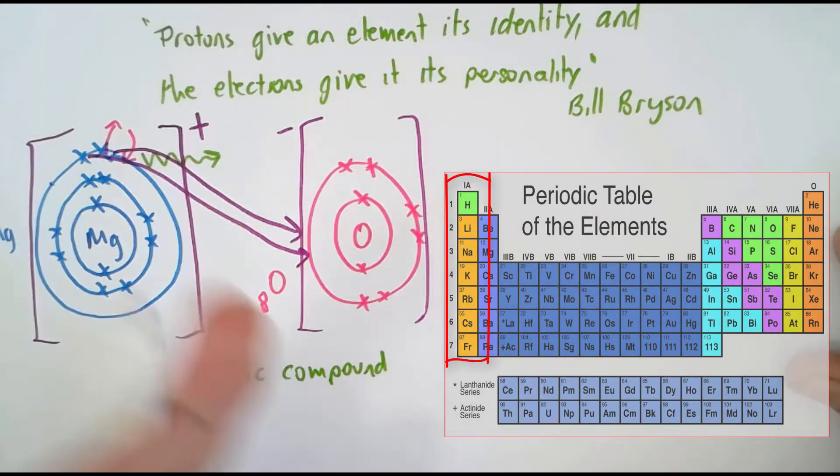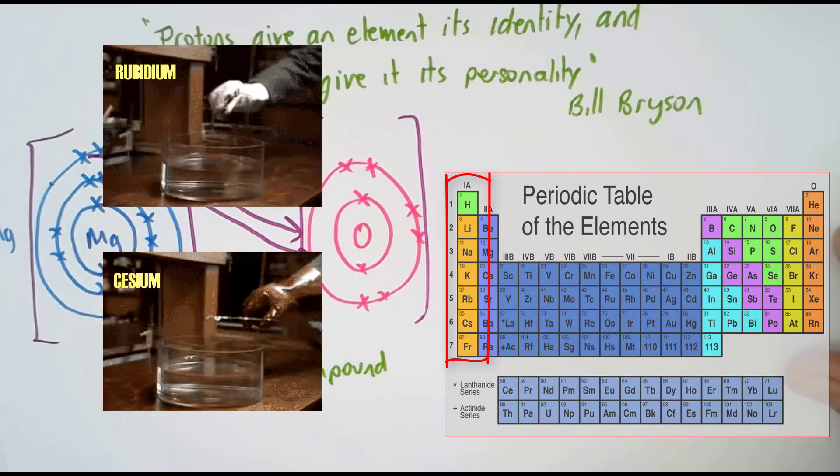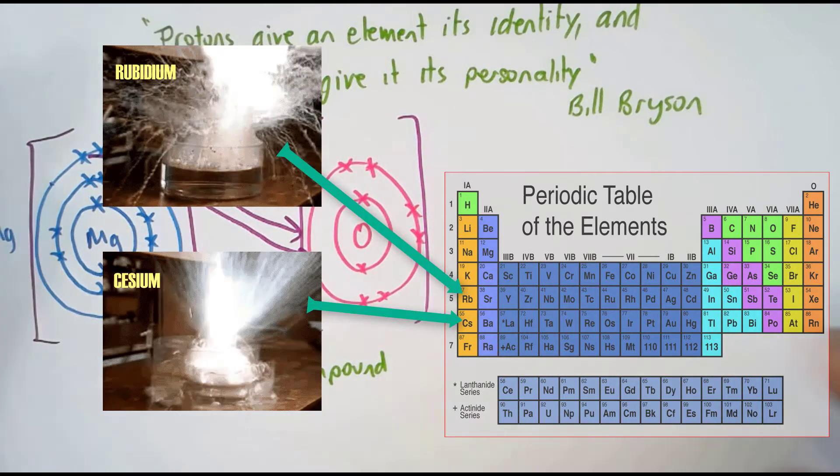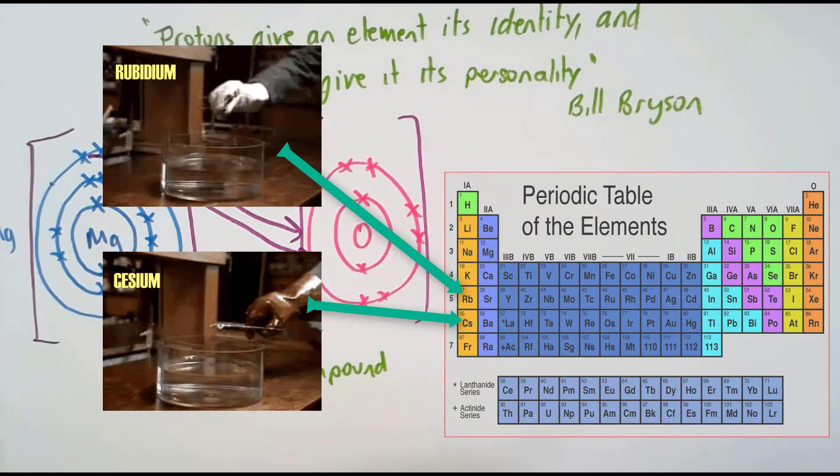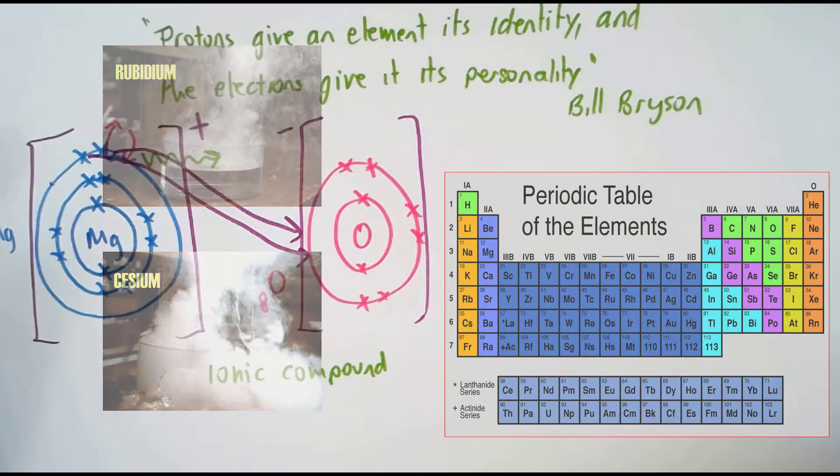Atoms in group 1 have 1 electron in their outer shell. They are more reactive, because it's easier for them to donate 1 electron to have a full outer shell.